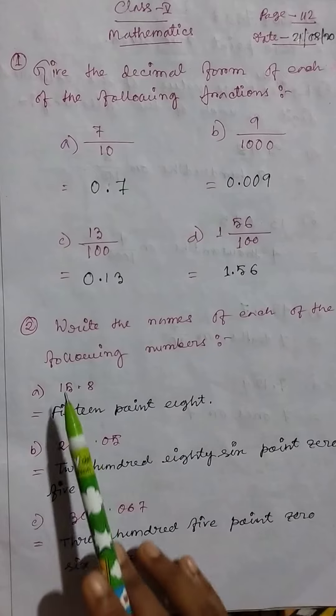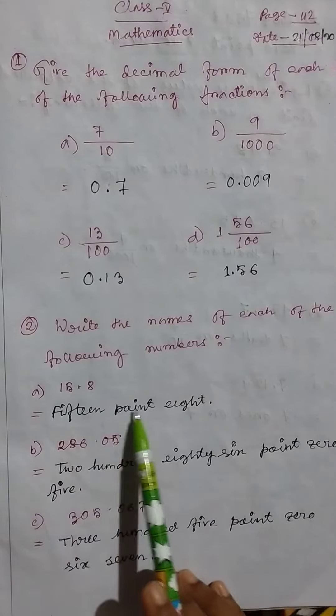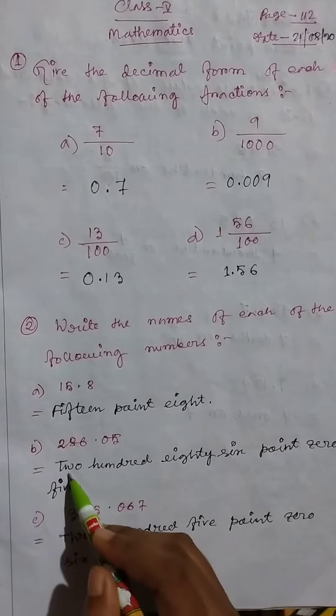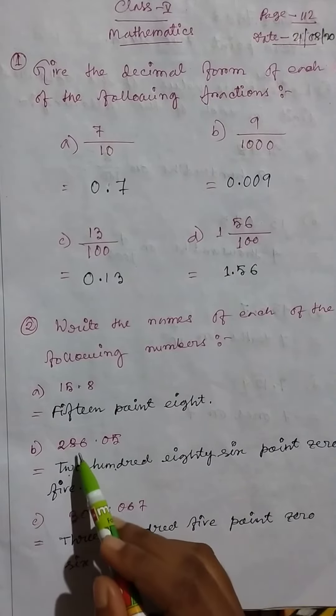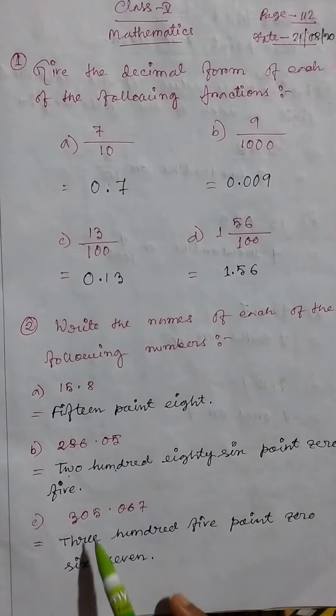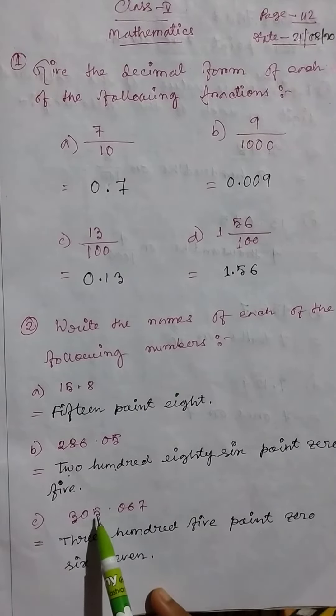15.8, so fifteen point eight. Then two hundred eighty six point zero five. Then three hundred five point zero six seven.